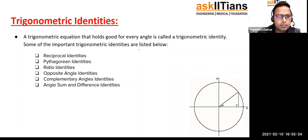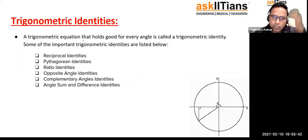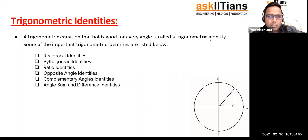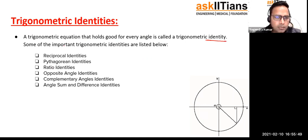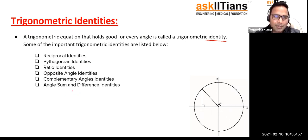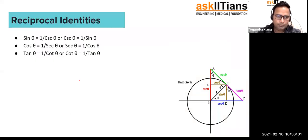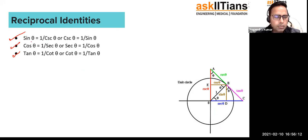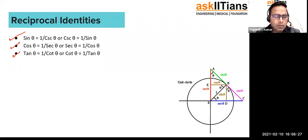We can also relate these trigonometric ratios to a circle, but for now: a trigonometric equation that holds good for every angle is called a trigonometric identity. Some important identities are: reciprocal identities, Pythagorean identities, ratio identities, and opposite angle identities. For reciprocal identities: sin θ = 1/cosec θ, cos θ = 1/sec θ, and tan θ = 1/cot θ.